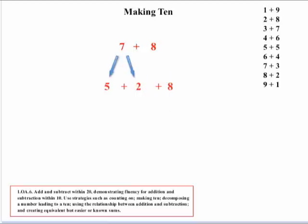Not all kids think the same. Some might focus on the number 8 and realize you have to add 2 to the 8 to get 10. So they'll break down the 7 to 5 plus 2 to get the sum of 10. Slightly different, but still arriving at the final answer of 15.